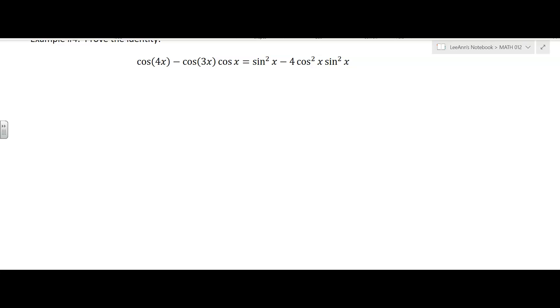Alright, you notice on the left that you have a 4x for an argument and a 3x for an argument, but on the right all the arguments are just x, so there's probably a good chance that we want to get rid of the 4x and the 3x as far as having an argument goes. Okay, so I can write 4x as 3x plus x.